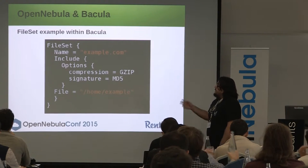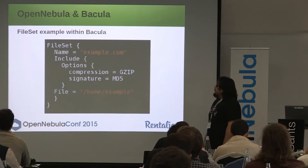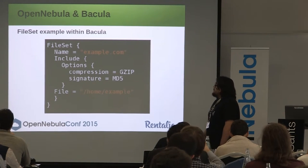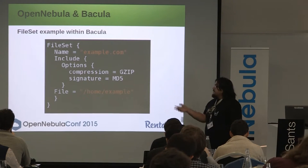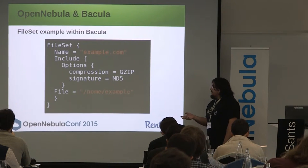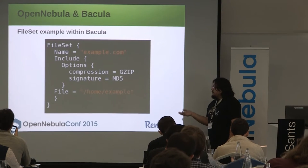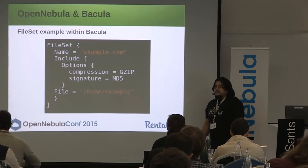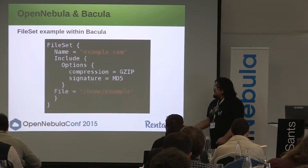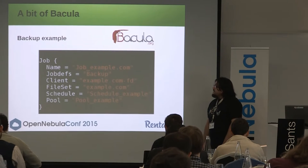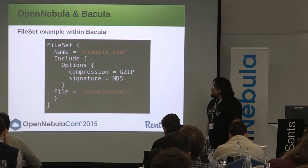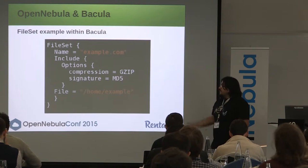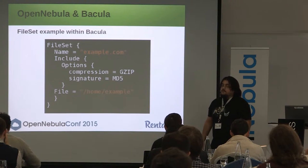This is a file set. It has the name, the options — compression, signature — and in this case we are using a file. This is a file, or a directory, which is /home/sample. And with this job, Bakula will retrieve all the files under /home/sample and store it.